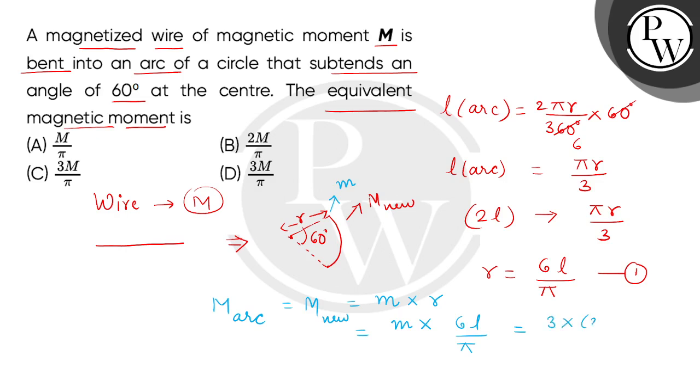This becomes 3 multiplied by 2mL divided by π. Why did we get the value of 2mL? Because this wire, if magnetic length is twice L and pole strength is the same, what was the value of M? It was m multiplied by 2L. When we put this capital M, that is the old magnetic moment, we have the answer as 3M divided by π. So the correct option will be option D. Thank you.